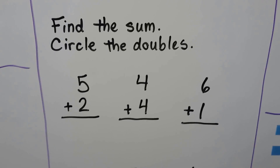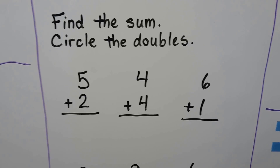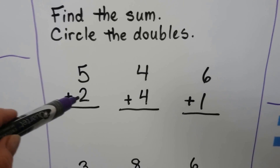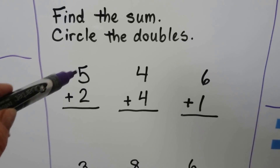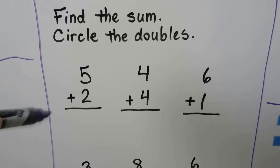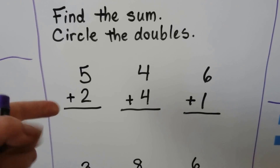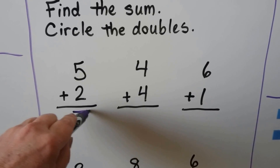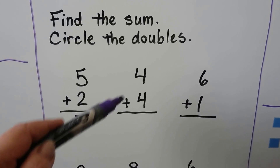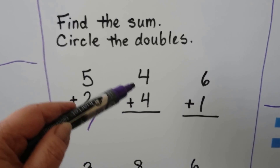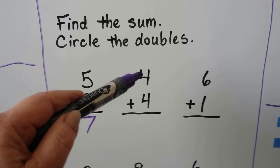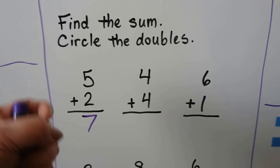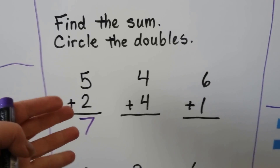We can find the sum and circle the doubles. 5 plus 2: we start with the larger number and count on 2 — 6, 7. So 5 plus 2 is equal to 7. 4 plus 4: we start with the 4 and count on 4 — 5, 6, 7, 8.